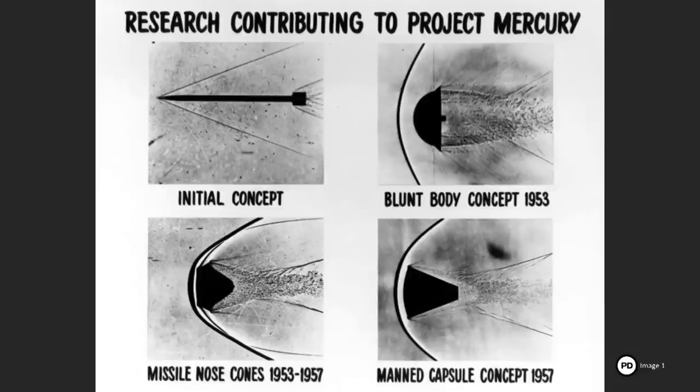Big breakthrough came in the 50s when they decided you don't make long slender things, you make blunt bodies and that's been the way we've done it ever since. It's so self-evident what you do, it's blunt, it pushes the air out of the way, slows you down and the heat transfer is minimized.